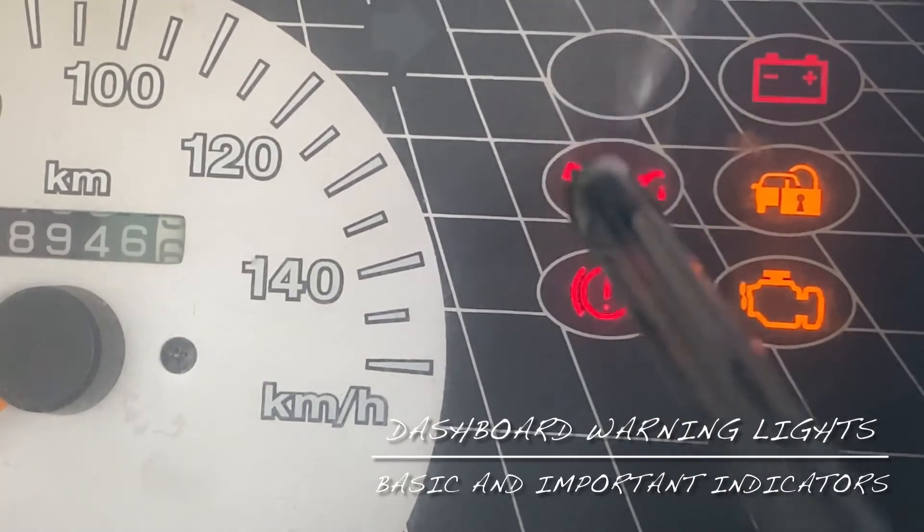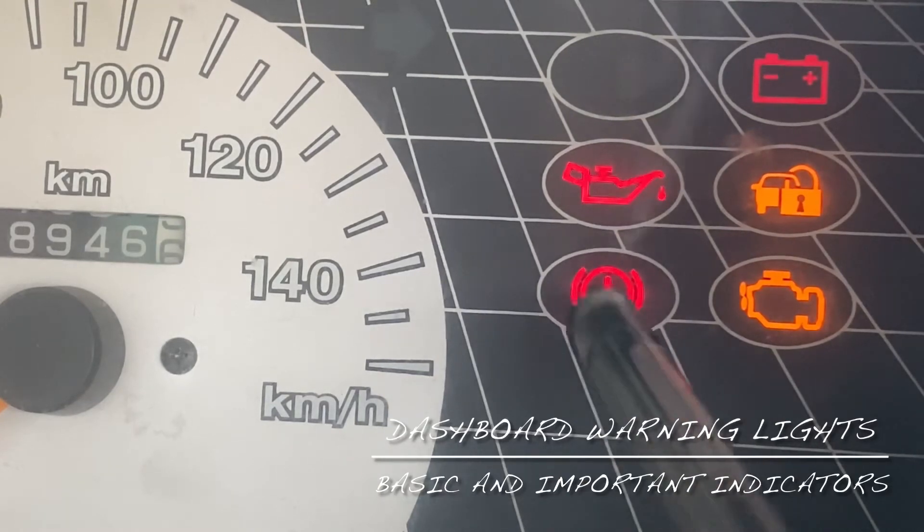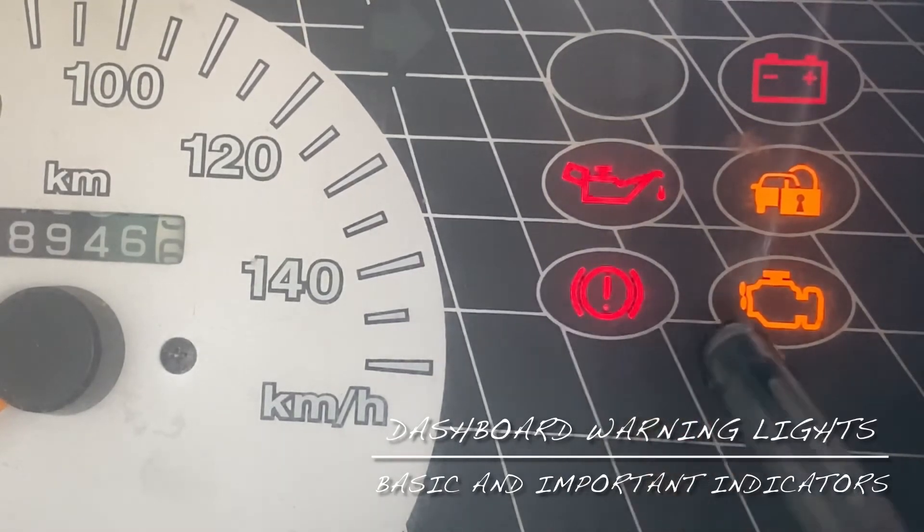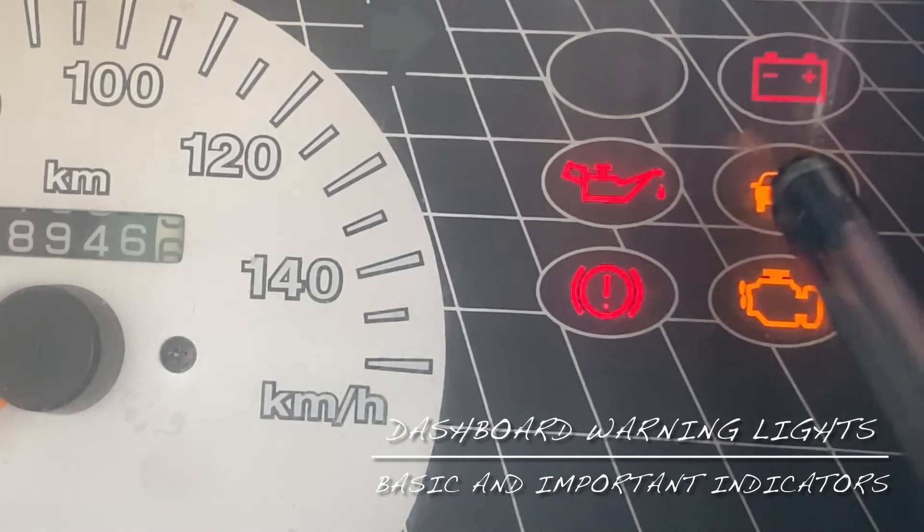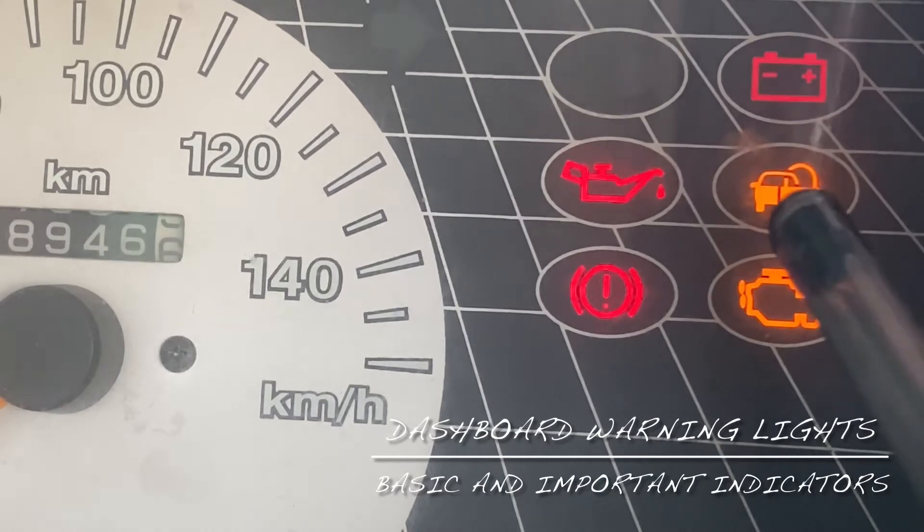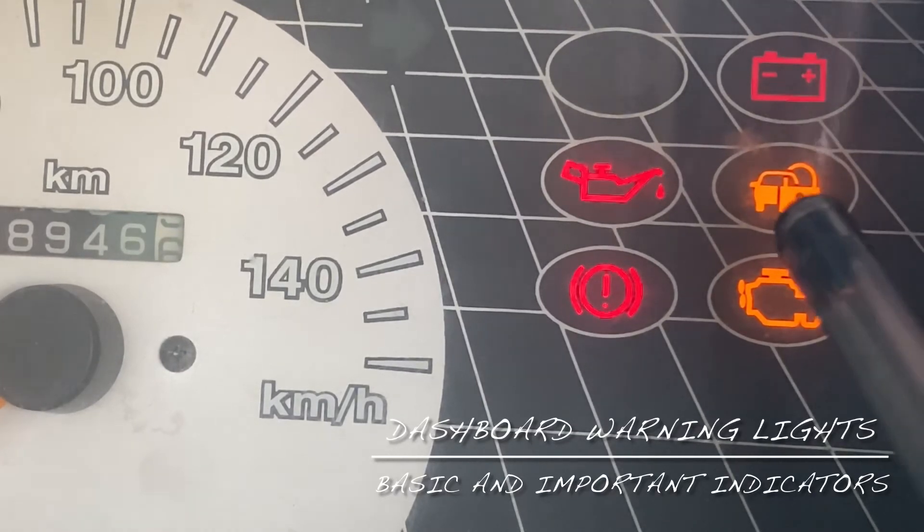Now we will go for these two orange colors. One is having this lock and car-like symbol. This is the engine immobilizer system. This Maruti car has the engine immobilizer system.